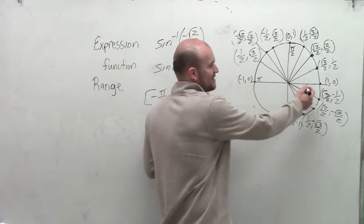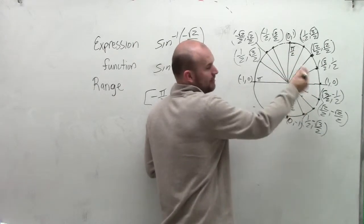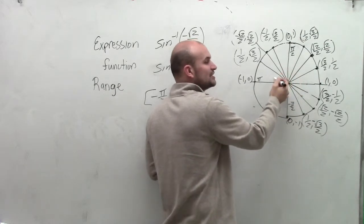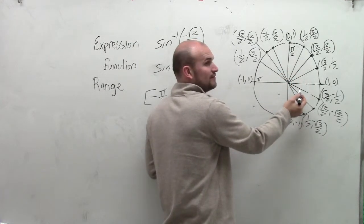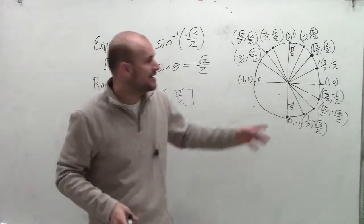And I have two angles here. I have an angle I could go in the negative version, or I could go also in the positive version, plus all my other coterminal angles. But if I go in the positive version, you notice that my angle is going to go outside of the range of the function. And remember, our inverse functions have to stay within our range.